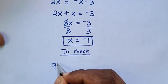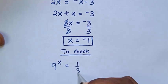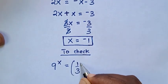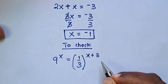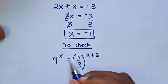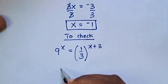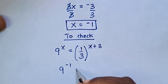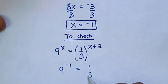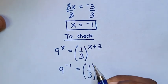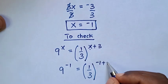So from our problem, which is 9 power of x is equal to 1 over 3, brackets, power of x plus 3. We substitute the value of x, which is negative 1. So it will be 9 power of negative 1 is equal to 1 over 3, brackets, power of negative 1 plus 3.